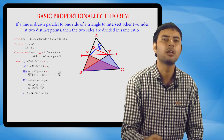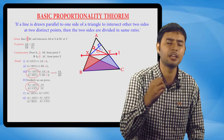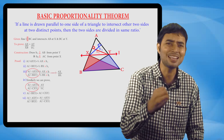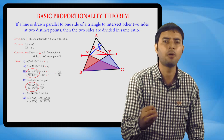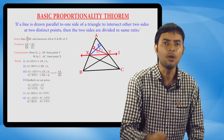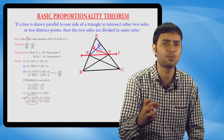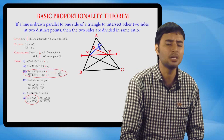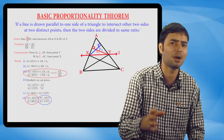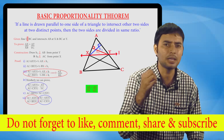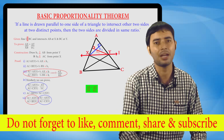Therefore, area of triangle AXY upon area of triangle BXY equals area of triangle AXY upon area of triangle CXY. Substituting, area of triangle AXY upon area of triangle BXY equals AX upon XB, and area of triangle AXY upon area of triangle CXY equals AY upon YC. That is why AX upon XB equals AY upon YC, and that completes the proof.